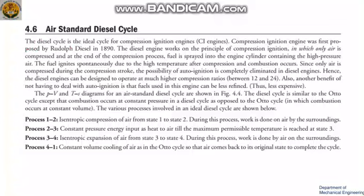In this lecture we study the Diesel cycle. The Diesel cycle is the ideal cycle for compression ignition engines. The advantage of the Diesel engine is that we have only air in the compression stroke, so we can go for a higher compression ratio — such as 12 to 14 — and we don't have the concept of auto-ignition because only air is present in the compression stroke.